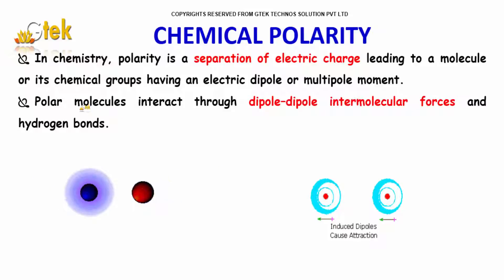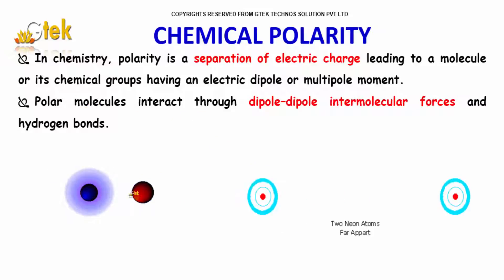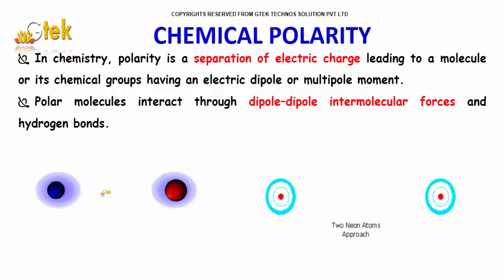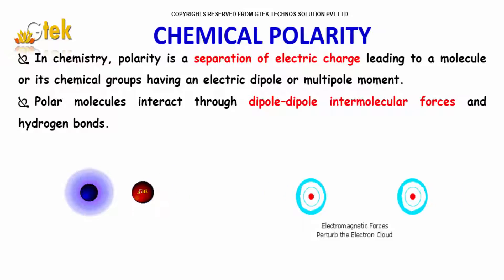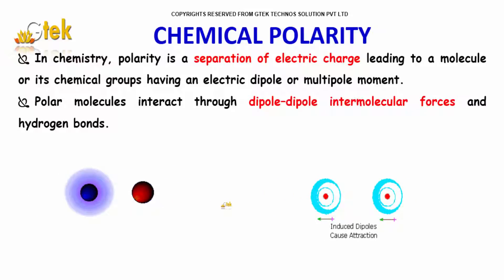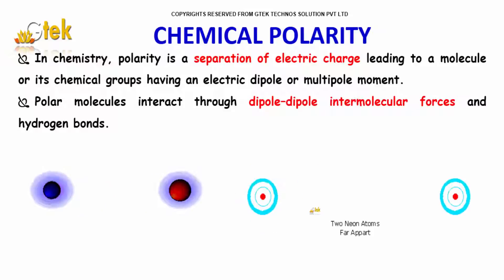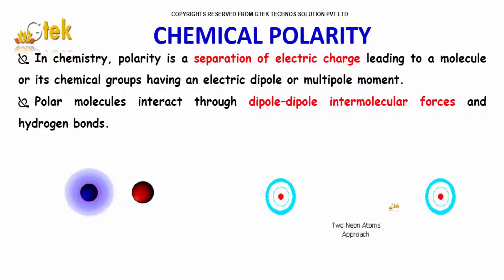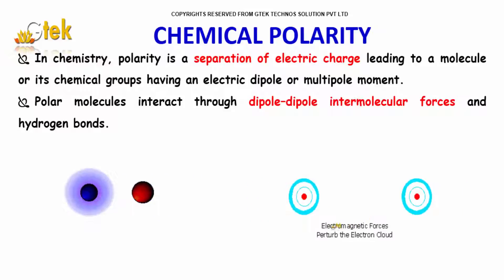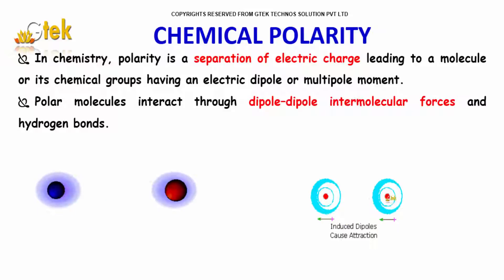Polar molecules interact through dipole-dipole intermolecular forces and hydrogen bonds. You are able to see there is no permanent dipole — two neon atoms are coming together, and induced dipoles cause attraction.